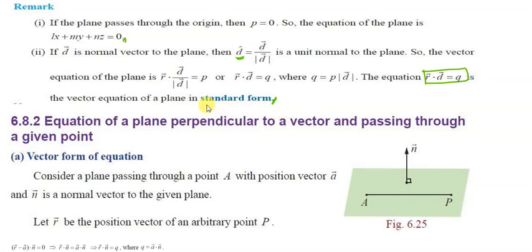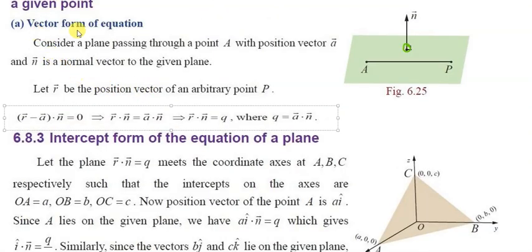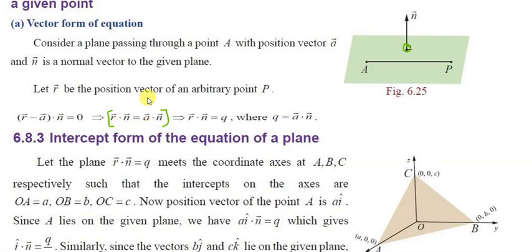Next topic: equation of a plane perpendicular to a given vector and passing through a given point. The vector form of this equation is: r-vector minus a-vector, dot n-vector, equals zero. This simplifies to r-vector dot n-vector equals a-vector dot n-vector.